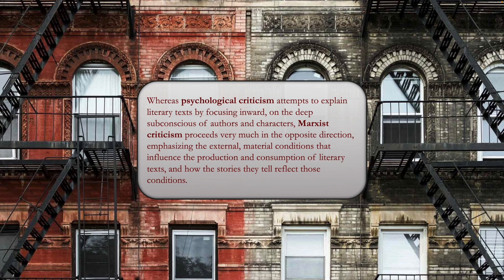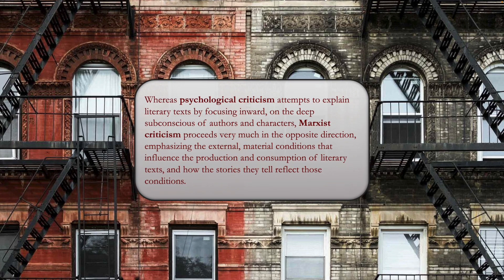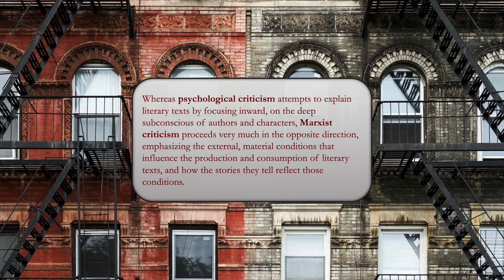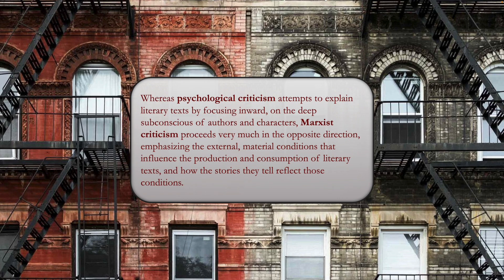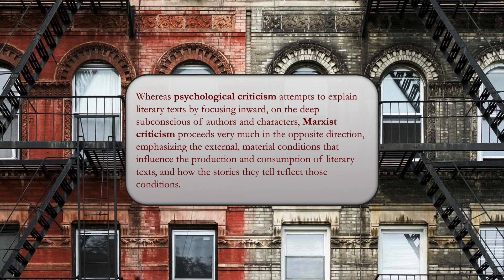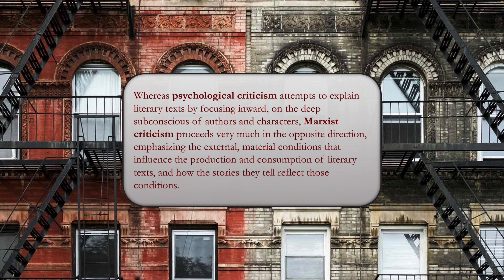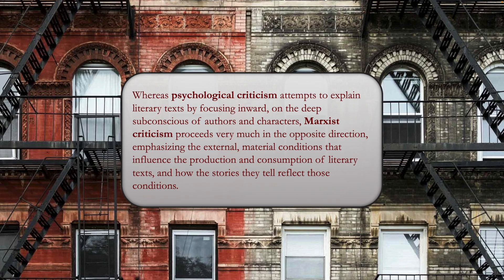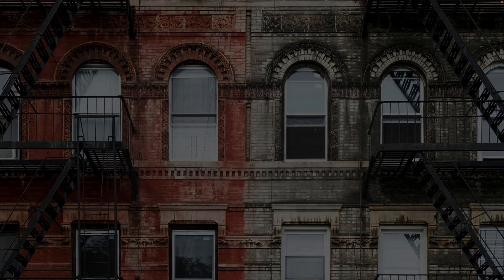Psychological criticism attempts to explain literary texts by focusing inward, looking at the deep subconscious of authors and characters. Marxist criticism does the exact opposite — it looks outside at the real world. It emphasizes the external material conditions that influence the production and consumption of literary texts, and how the stories those texts tell reflect those conditions. So, looking outward instead of inward. Let's take a look at some of the key concepts here.